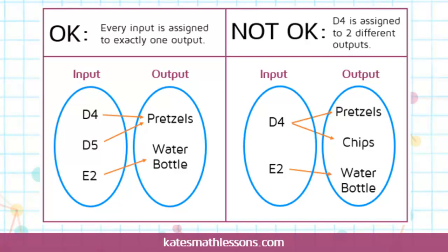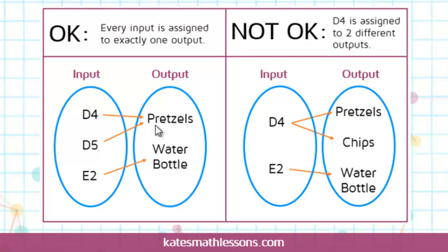If you look at the mapping on the left, every input is assigned to only one output. If I enter D4, I get pretzels. If I enter D5, I also get pretzels — that's okay, that just means two slots in the vending machine both have pretzels. And if I enter E2, I get a water bottle. Each input is only assigned to one output, so this mapping is a function.